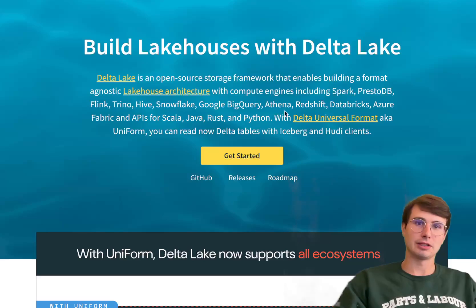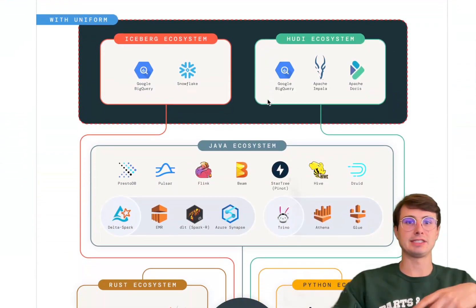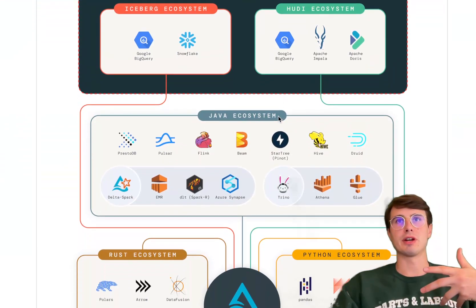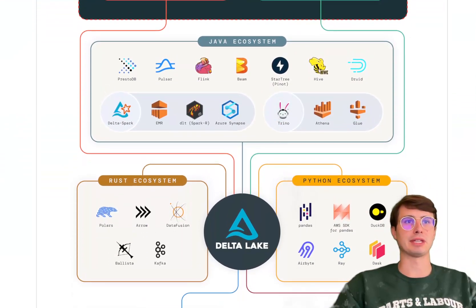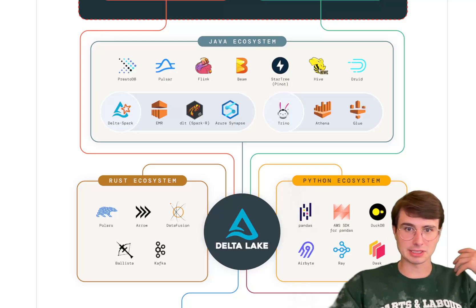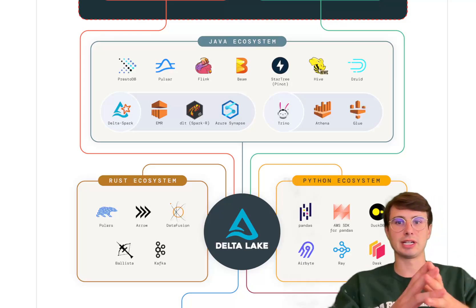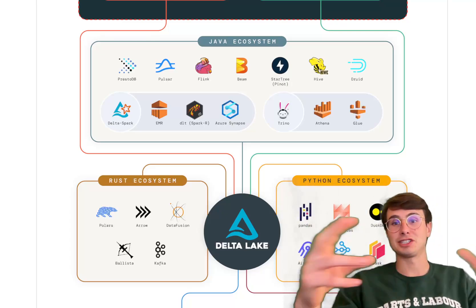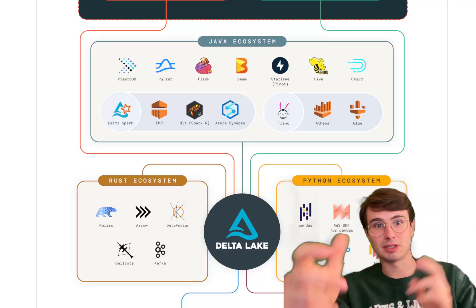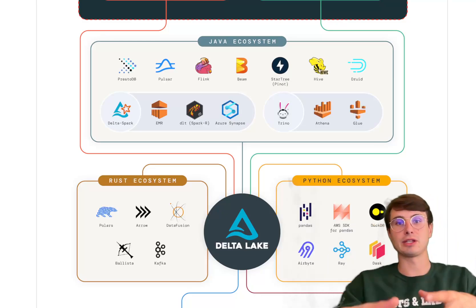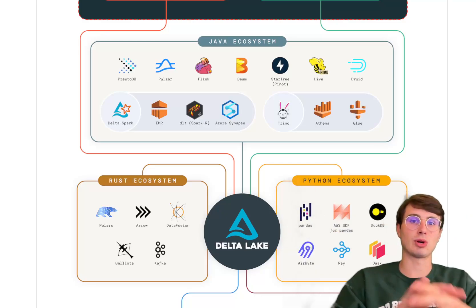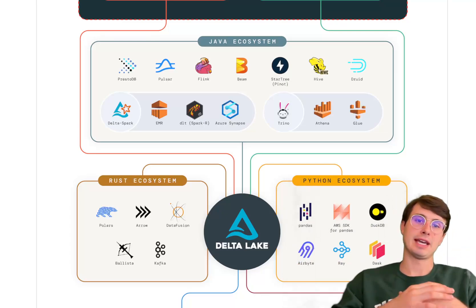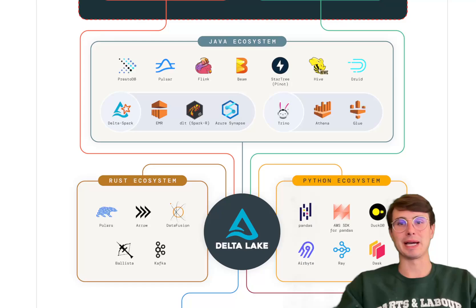How Delta Lake works is that it sits on top of existing storage layers, whether that's something like an S3 bucket, a Snowflake database, really whatever storage layer you're using, or even traditionally something like Azure Data Lake Storage or Hadoop Distributed File Storage. It allows you to query data from across these different object stores in that classic data lake style and build reliable and scalable data pipelines out of them.